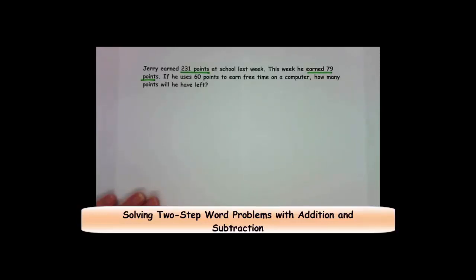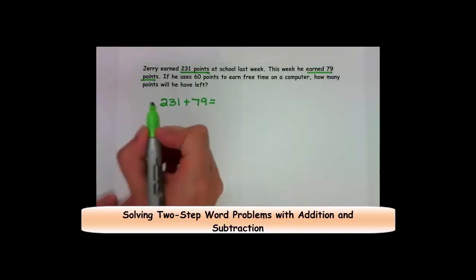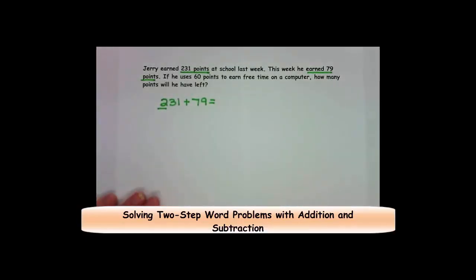So, I'm going to be adding 231 plus 79. To do that, I'm going to use my partial sum strategy and I'm going to start with my hundreds place. 231 has two hundreds. 79 has no hundreds. So, I know that I just have 200. Next, I'm going to add my tens place. I have 30 plus 70, which I know is a sum of 100. Then, I have my ones place, which is 1 plus 9, which is another 10. Now, I'm going to add up 200 plus 100 plus 10. 200 plus 100 is 300 and adding one more 10 is 310.